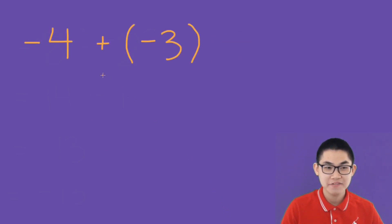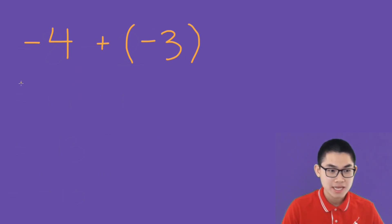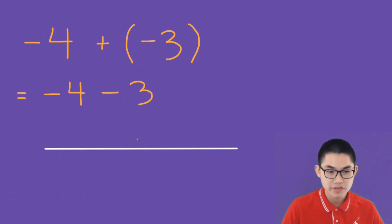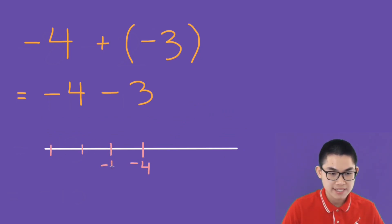What is negative 4 plus negative 3? When you see plus a negative number, it just means minus. So this is the same as negative 4 minus 3. We can use the number line — we start at negative 4, then we move left 3 times: 1, 2, 3. Here we have negative 5, negative 6, and negative 7. So the answer would be negative 7.